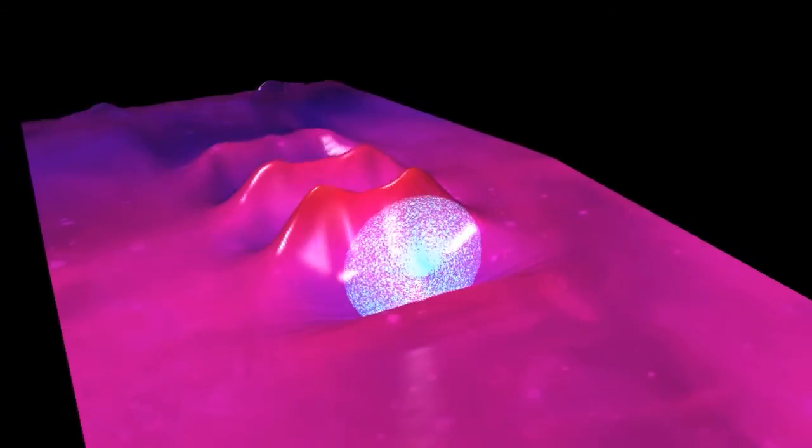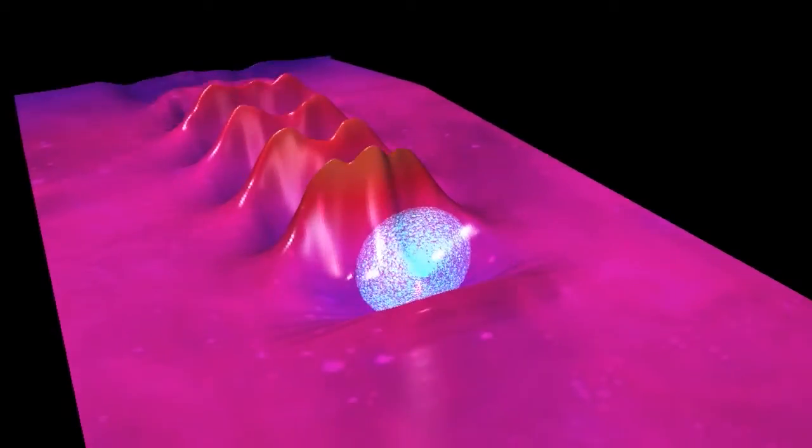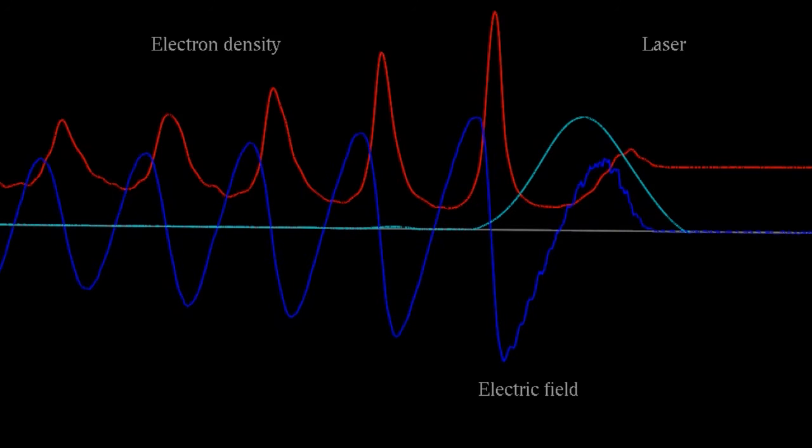We have a plasma wave, and the electrons are like the surfers. They are trapped by the wave, and they are accelerated to relativistic speed.